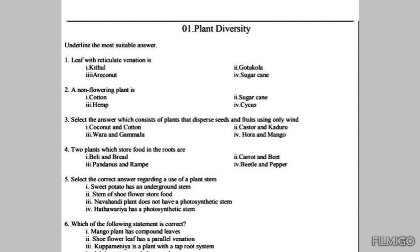Third question: select the answer which consists of plants that disperse seeds and fruits only using wind. In Grade 7, we discussed about three main methods of dispersion of fruits and seeds.